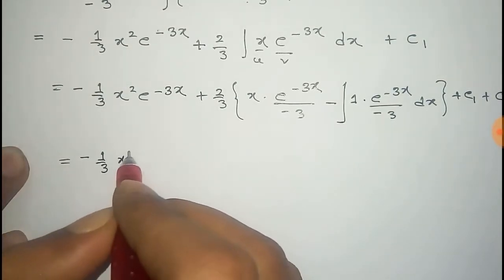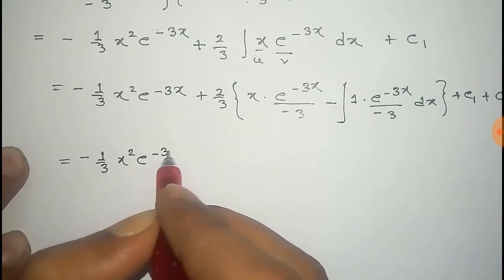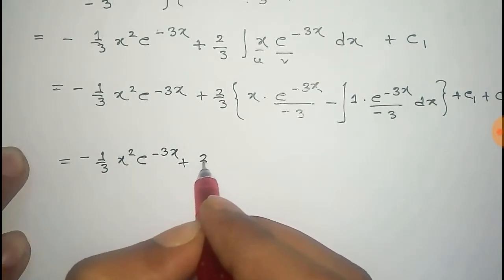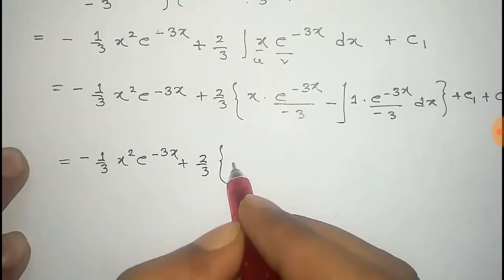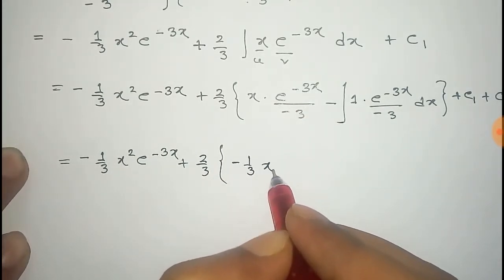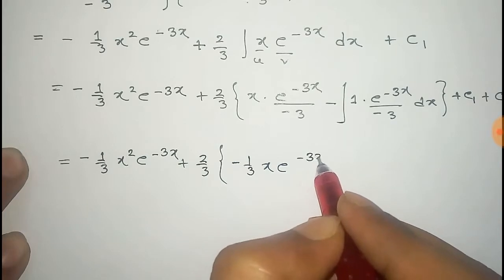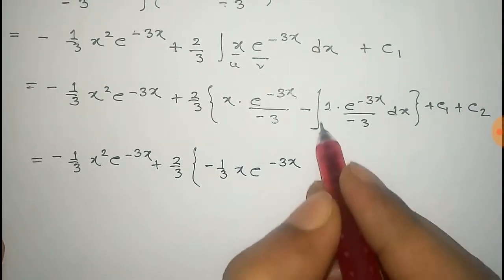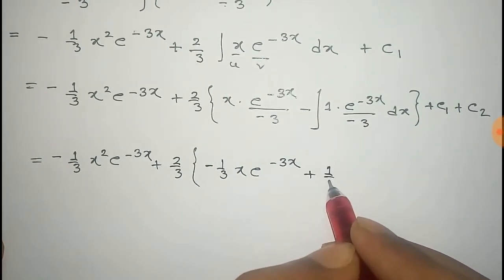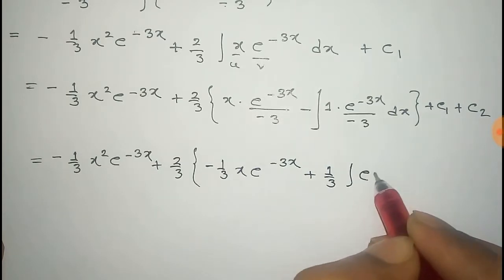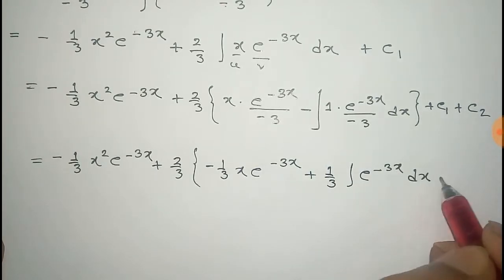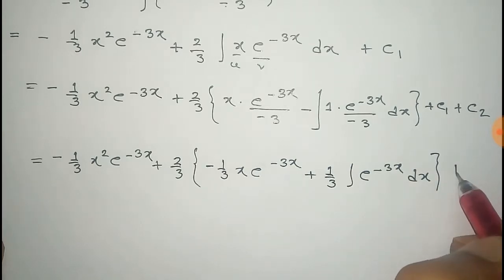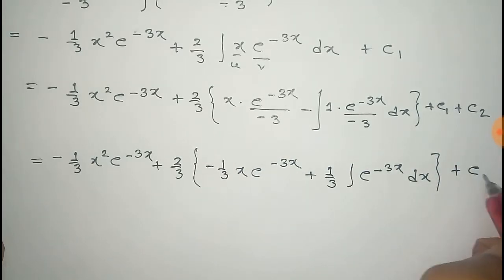That equals minus one third x squared e to the power minus 3x, plus two thirds times: minus one third x e to the power minus 3x, and the minus minus becomes plus one third times the integral of e to the power minus 3x dx, plus a new constant c3 prime.